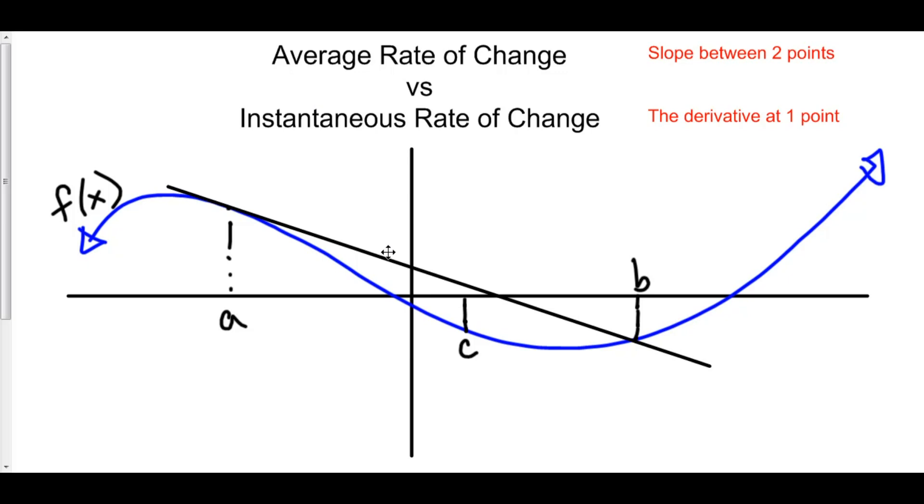Now instantaneous rate of change is the slope of the tangent line at one point. So let's say I want to find the tangent line at x equals c and find the slope of this line that is given by the tangent line at x equals c. That is instantaneous rate of change. It occurs at one infinitesimal moment.